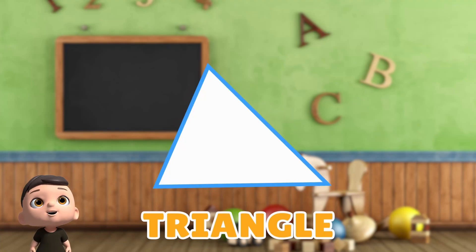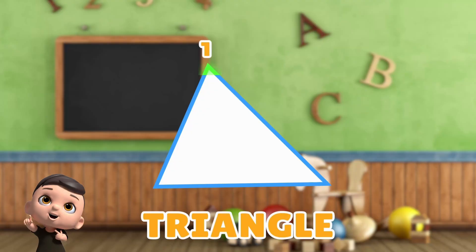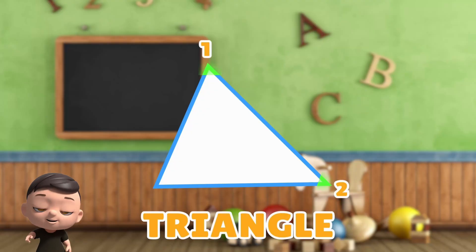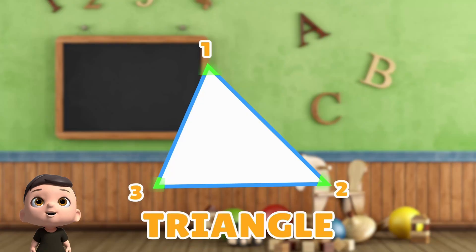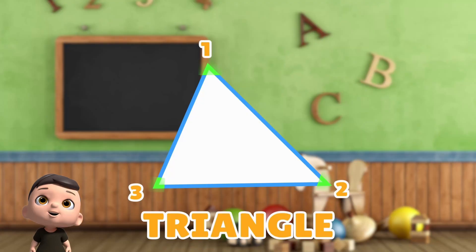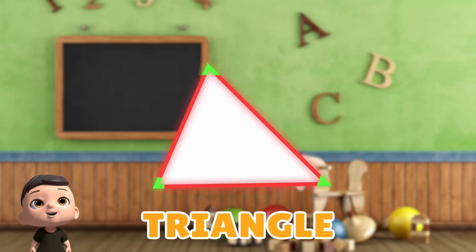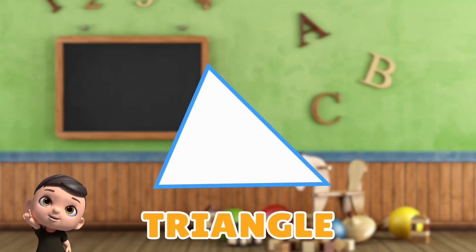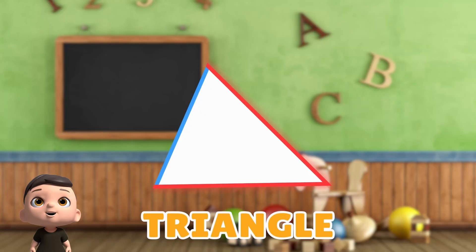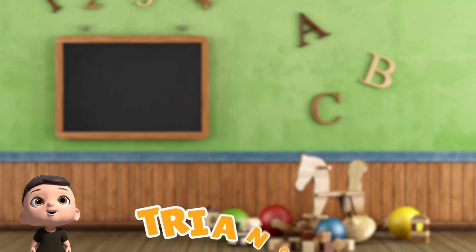Now let's count the vertices of a triangle. 1, 2, 3. Triangle has 3 vertices. So we can say that a triangle has 3 sides and 3 vertices. A triangle is a shape with 3 sides and 3 corners, and the sides can be of different lengths.